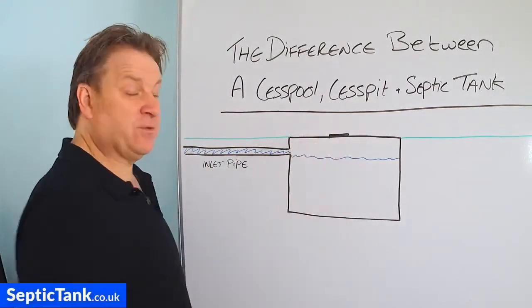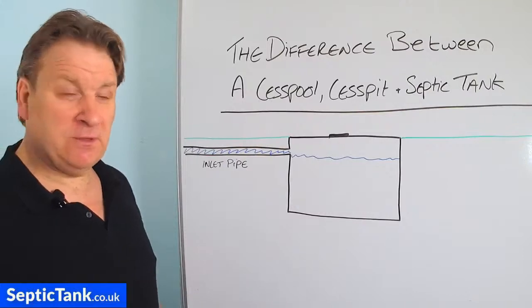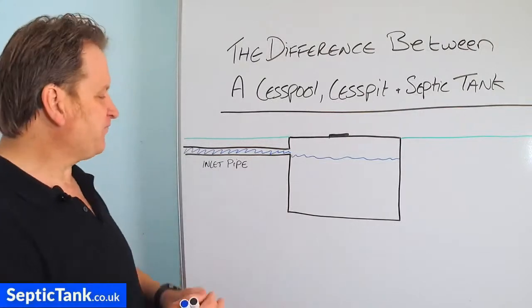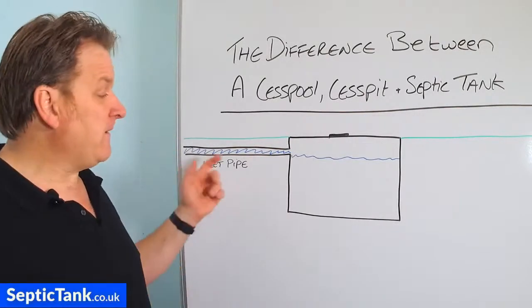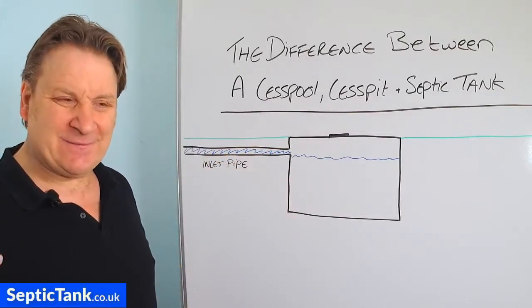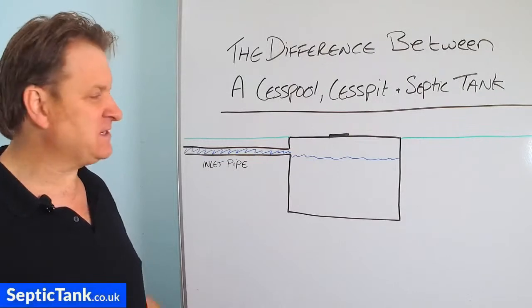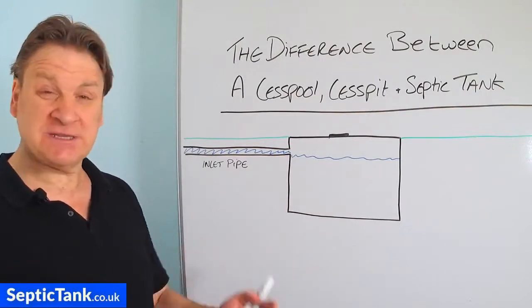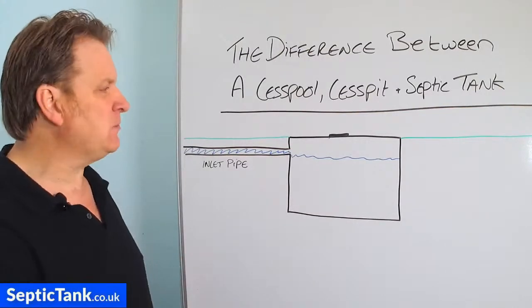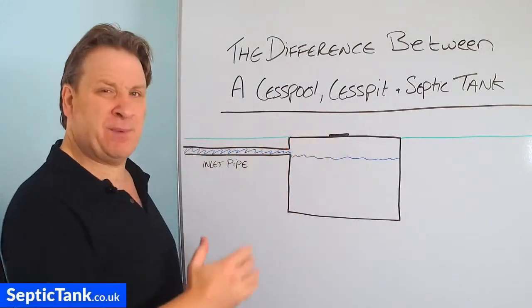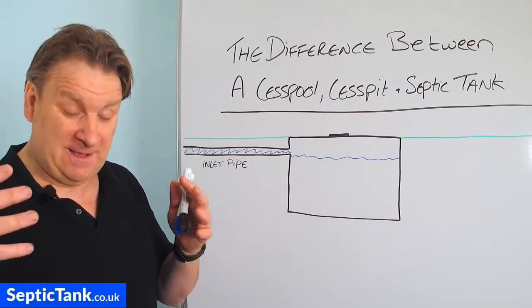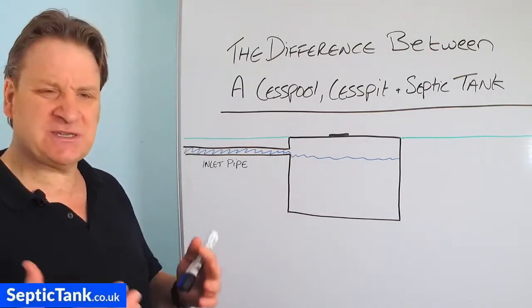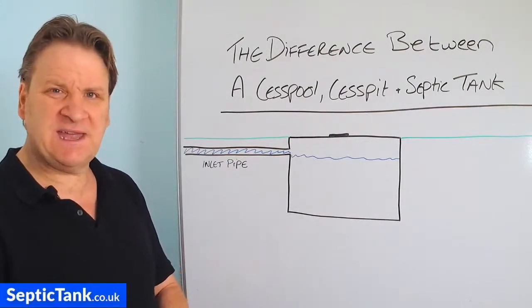The downside or the negative points are that a cesspool, once it's full, will need emptying. Obviously that sounds pretty obvious, but if you've got a house and there's two, three, four of you, then that cesspool is going to get full up literally every day or every few days. So in that situation you'd need to get your cesspool emptied once or twice a week, and it costs about two to three hundred pounds a time to do so.